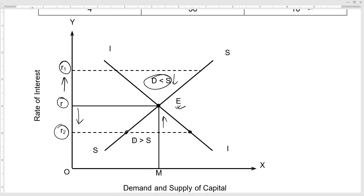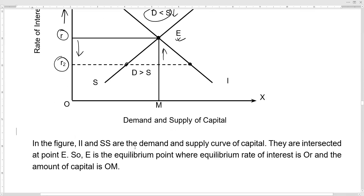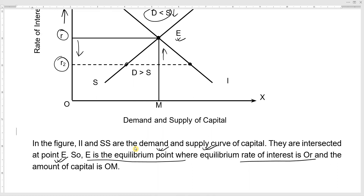In the figure, II is the demand curve of capital and SS is the supply curve of capital. Their intersection is the equilibrium point, which determines the equilibrium rate of interest and the equilibrium amount of capital.